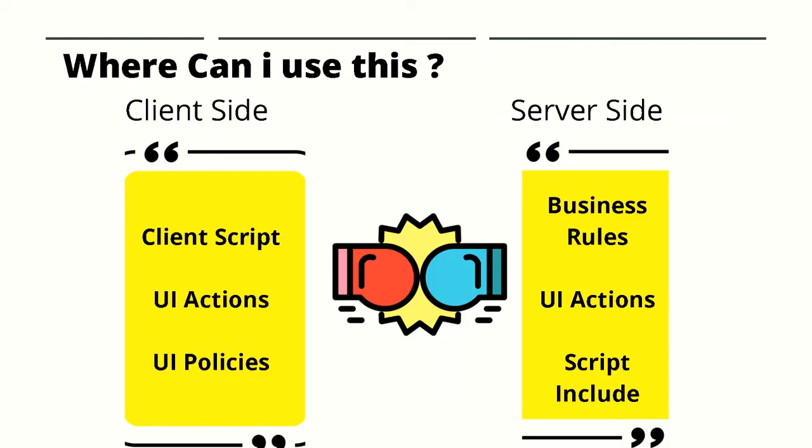The APIs we will discuss in the rest of the course generally fall into two categories: client-side and server-side. Server-side APIs can be used in any server-side scripting location, and client-side APIs can be used in client-side scripting locations. You should start to see that the location of a script is not as important as knowing how to interact with these APIs.